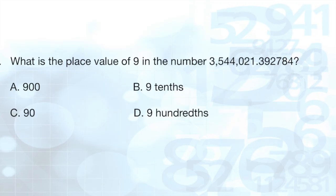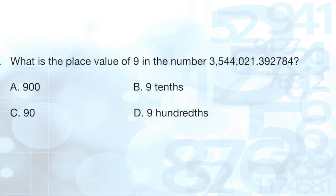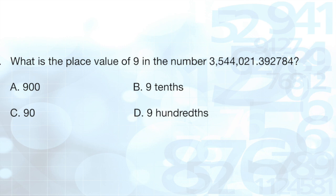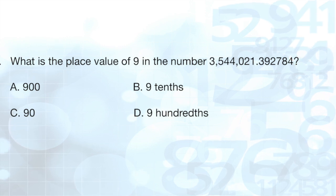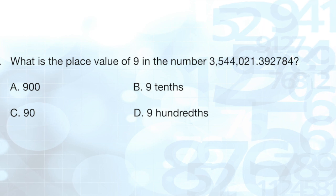Question 1. What is the place value of 9 in the number 3,544,021.392784? A, 900, B, 9 tenths, C, 90, or D, 9 hundredths?